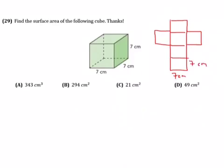So to find the area of a square, you multiply side times side, seven centimeters times seven centimeters, which will give you 49 centimeters squared.